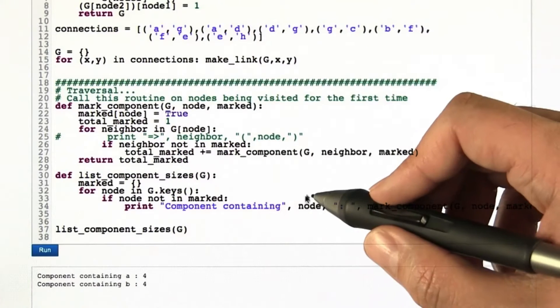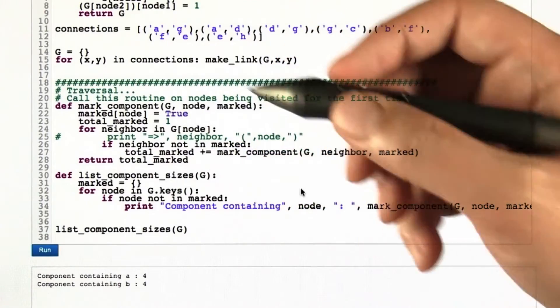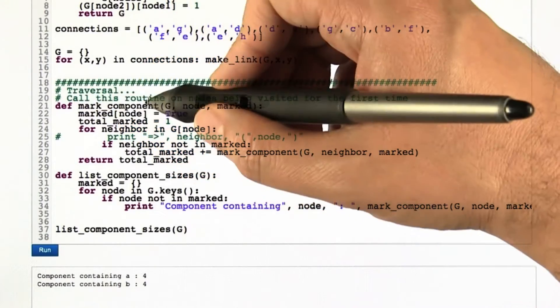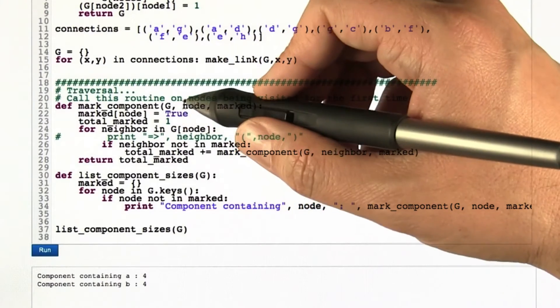How does it go about doing this? It essentially uses the same algorithm that I did when I was doing it by hand, but of course it does it in code. The main routine that we call is called mark_component. That's kind of like what I was doing when I was turning nodes purple. It works like this.